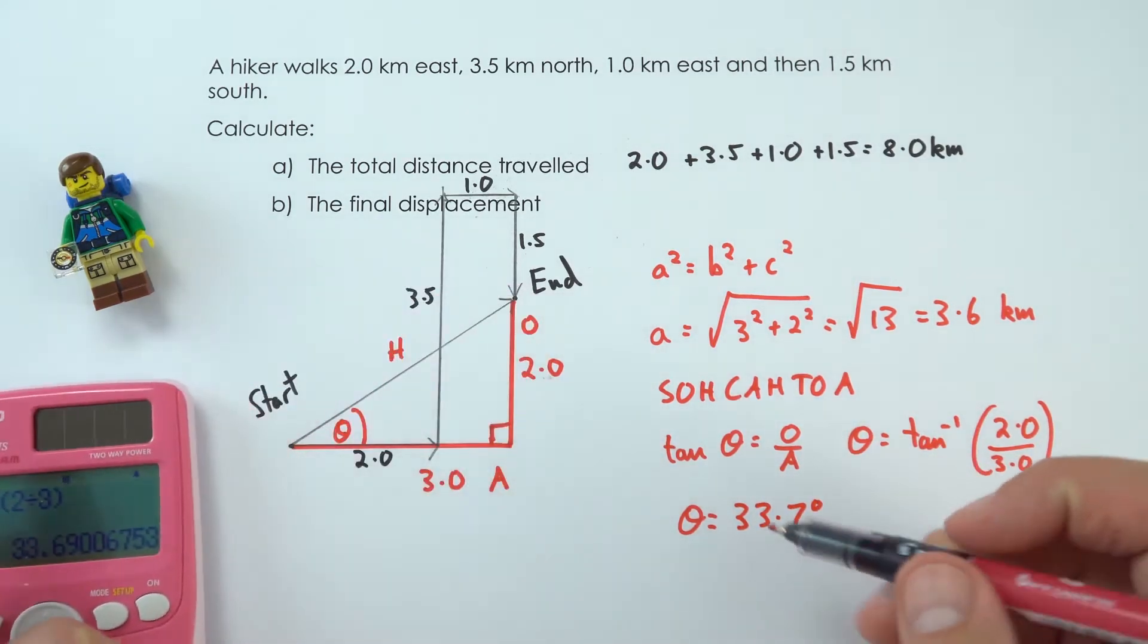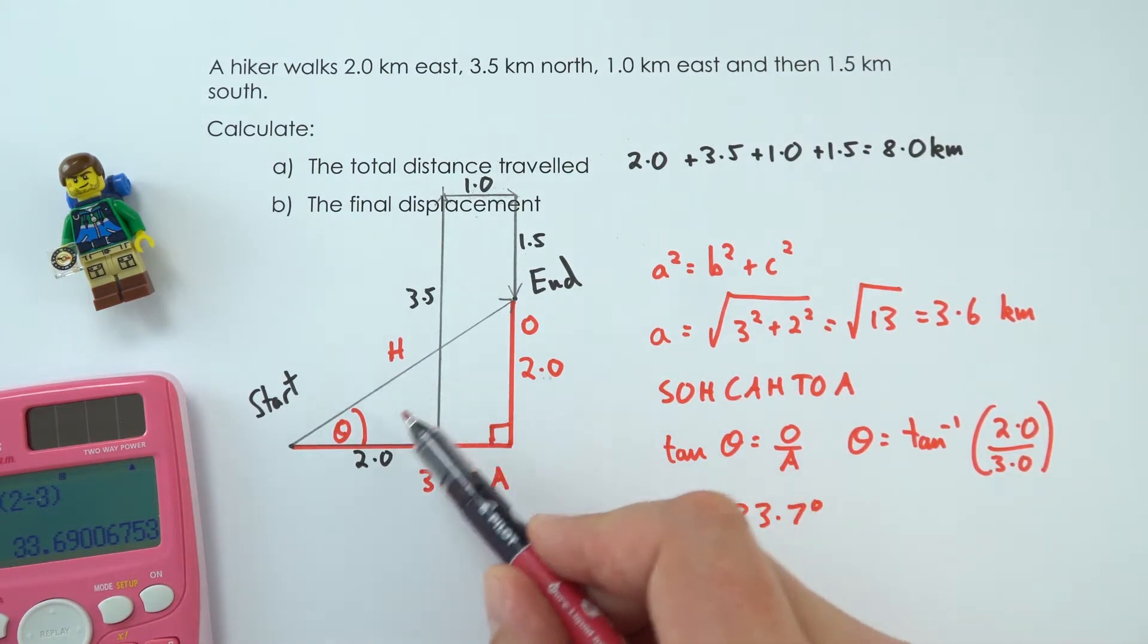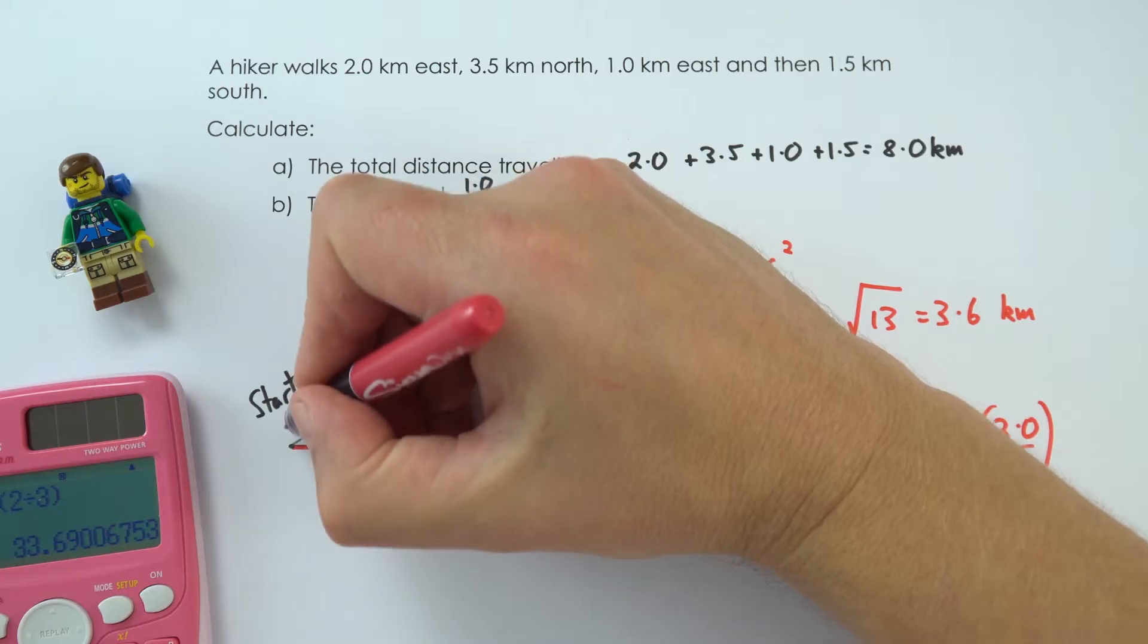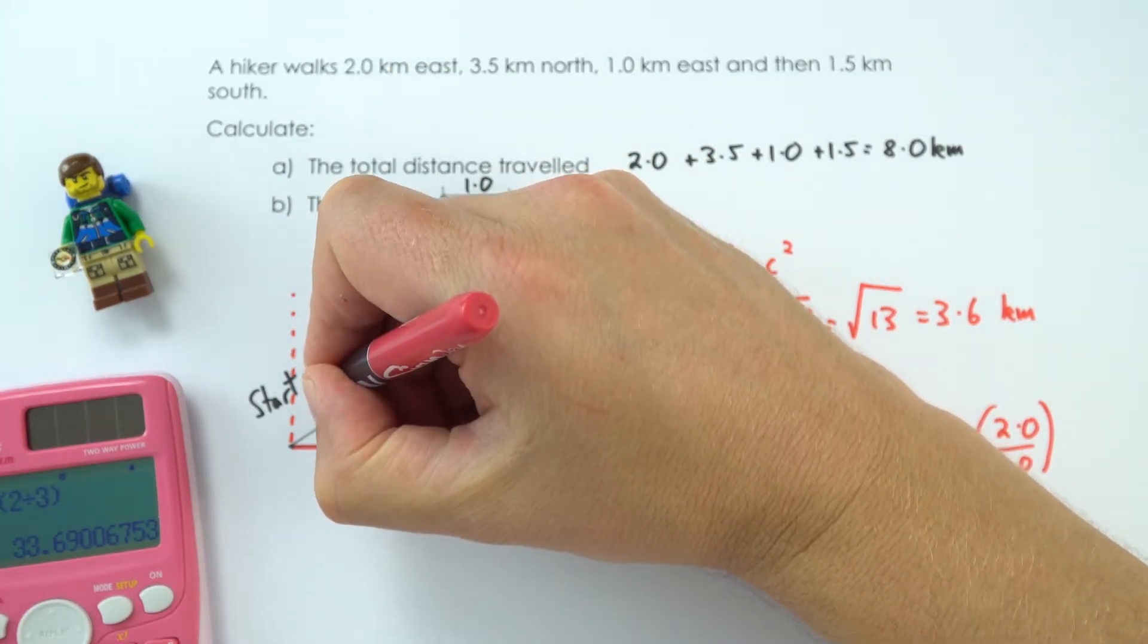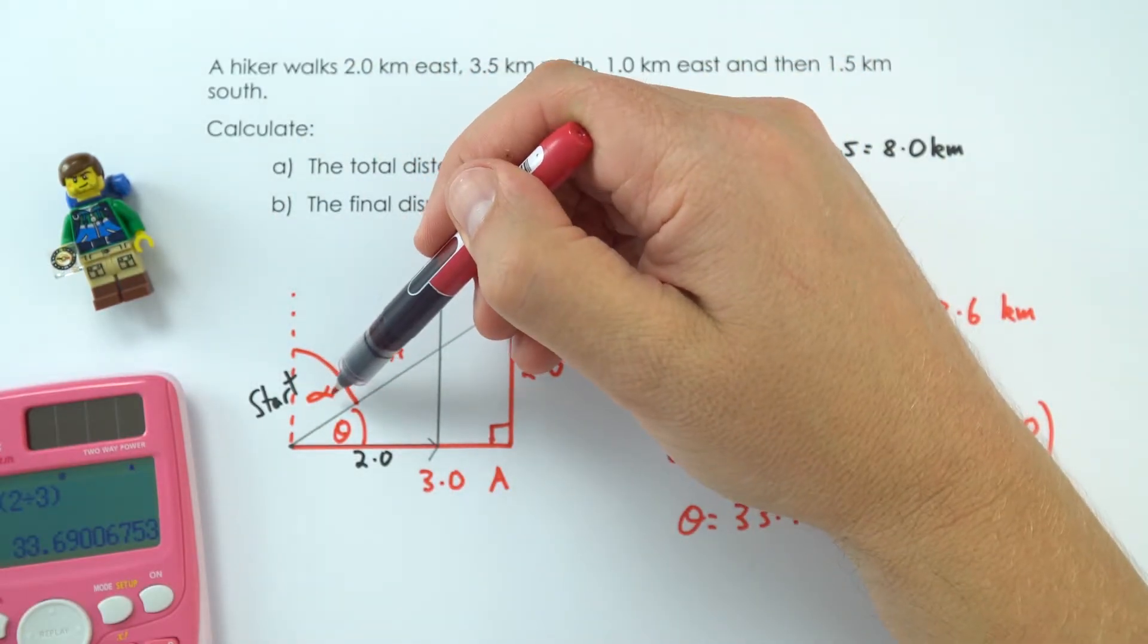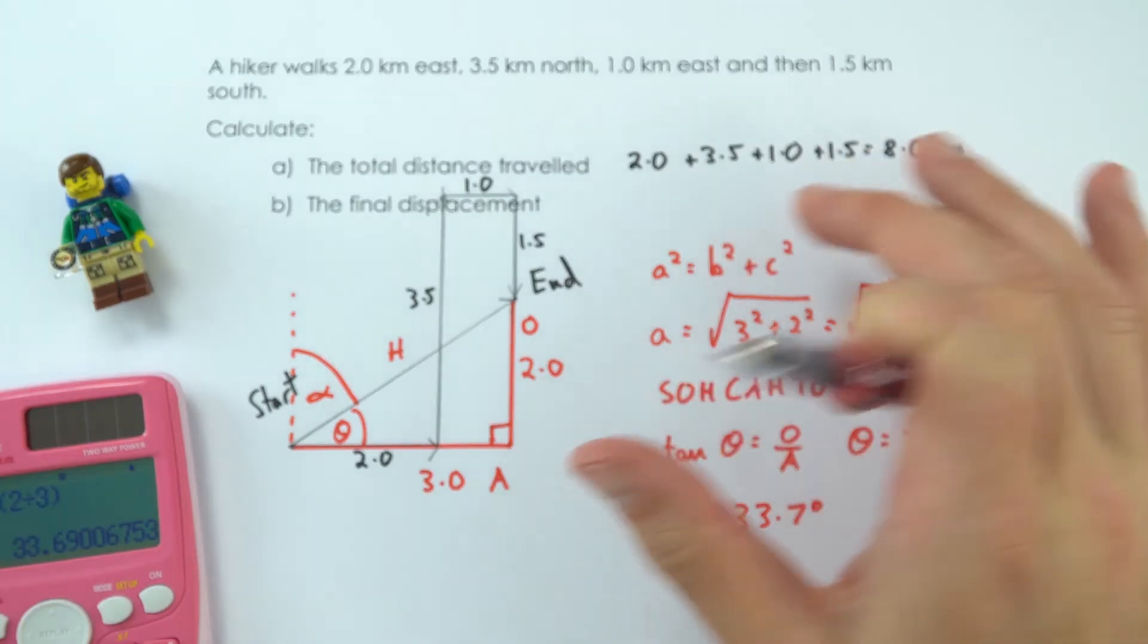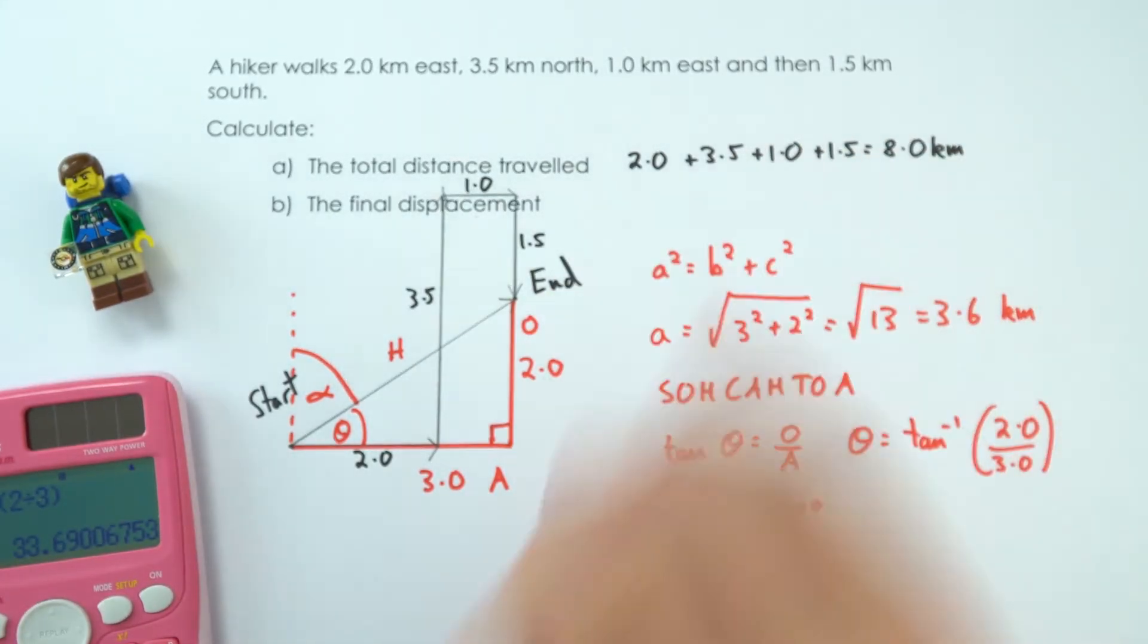That's fine—you can say it's 33.7 degrees north of east—but sometimes it's more useful to think about the bearing. I'm going to call this angle alpha. Sometimes it's more useful to think of the angle alpha because that gives you a bearing, which is useful when looking at things with directions, especially east, west, north, and south.